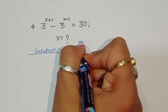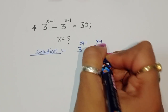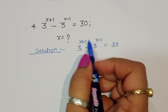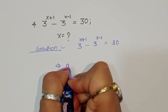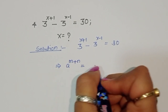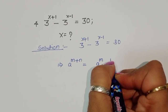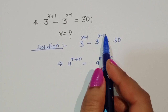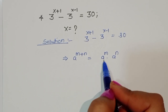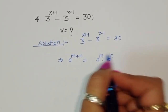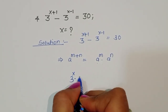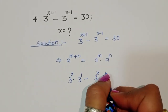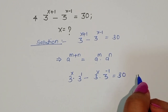We have 3 power x plus 1 minus 3 power x minus 1 equals 30. This is the form of a power m plus n. The formula is: if a power m plus n is given, we can write it as a power m times a power n. Applying this formula, we write 3 power x times 3 power 1 minus 3 power x times 3 power minus 1 equals 30.